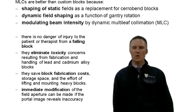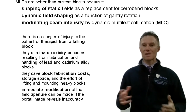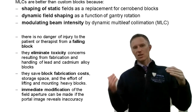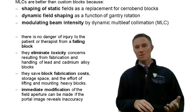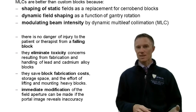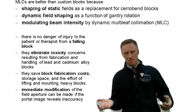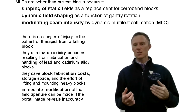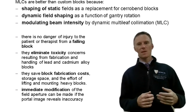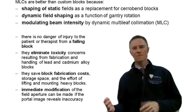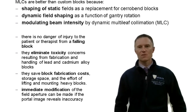Moving down toward the patient: we skip the mirror since it can be in different positions. MLCs and jaws can also be in different positions, and some machines may have additional MLCs for stereotactic treatments — a bolt-on MLC at the bottom of the machine with two or three millimeter leaf widths for finer resolution. These can be in various arrangements depending on machine design.